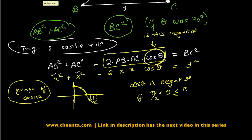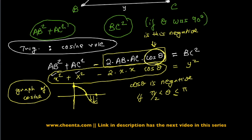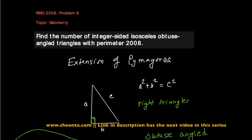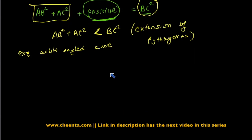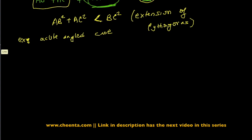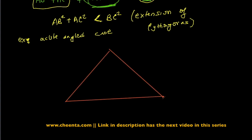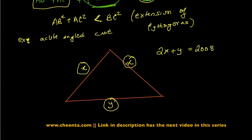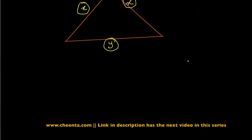With this extension of Pythagoras' theorem, we can go back and apply it to our special problem. We have an isosceles triangle with two sides equal to x, a third side equal to y, and the perimeter is 2008. So x + x + y = 2008. The obtuse angle is the included angle between the two equal sides, so we can directly apply our extension.